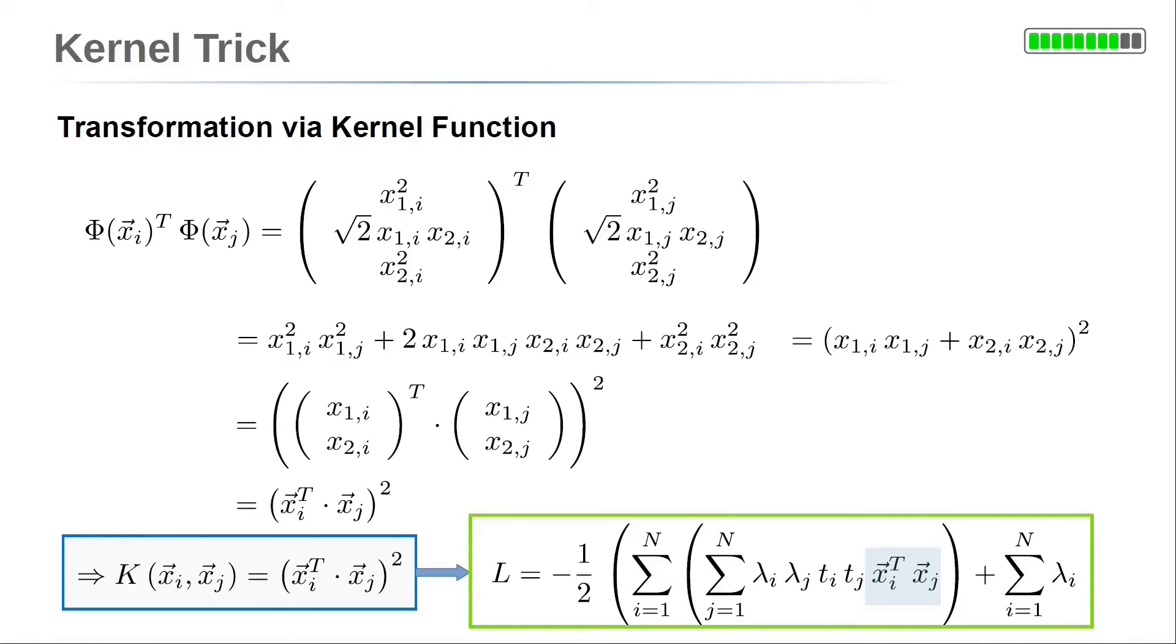This gives our final representation of the transformed variable product. So, we can replace the product of vector xi and vector xj just by the squared of this dot product. This incorporates our quadratic variable transformation.